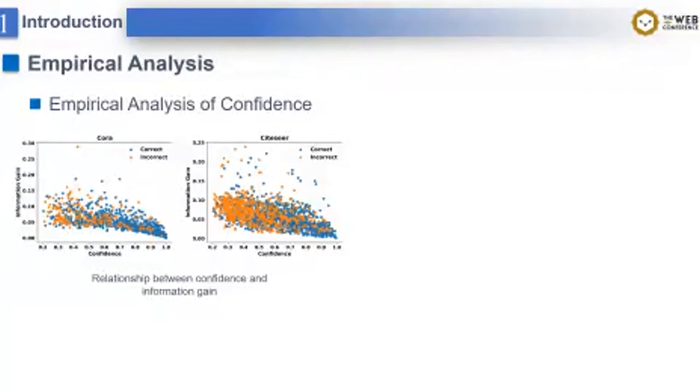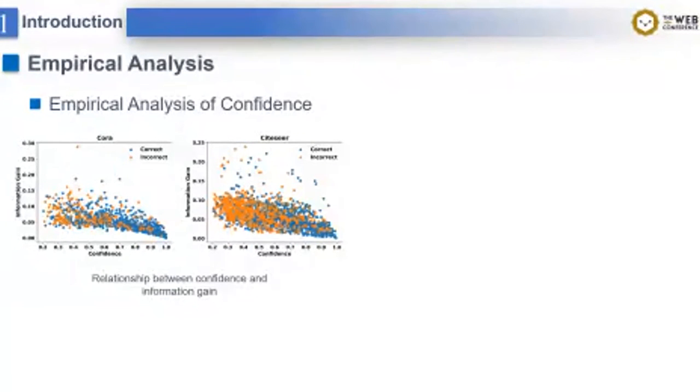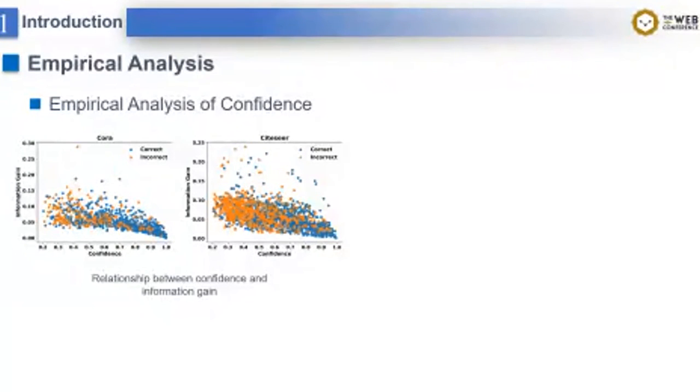With the above question, we conduct a few empirical studies. Firstly, we visualize the relationship between confidence and information gain on Cora and Citeseer datasets, where the x-axis is the confidence while the y-axis is the information gain, and the blue and orange dots respectively represent nodes with correct and incorrect predictions. We can observe a negative correlation, implying that existing graph self-training methods only focus on easy nodes—nodes with low information gain.